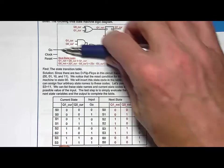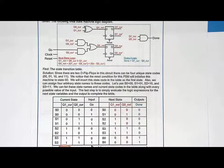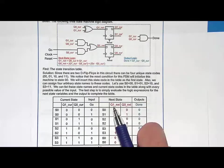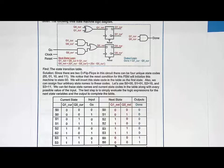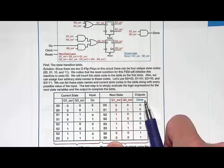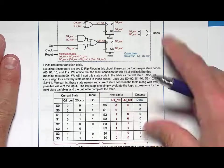List all possible inputs for the input to the system, which in this case was labeled go, so 0,1, 0,1. And then this over here is what you are creating. You're creating what the values are for q1next, and what the value is for q0next, and what the value is for done. And that tells you in a tabular form how this circuit operates.